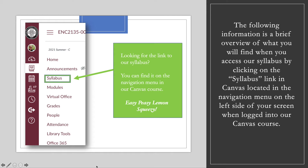For access to the syllabus — to download it, print it, or frame it, just kidding — you'll notice there is a syllabus button on our navigation menu in Canvas. Click on that to access the syllabus. Much of what it covers is what we're talking about right now, but I will ask you to engage with the syllabus more specifically for an assignment you'll do this week.